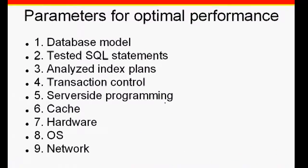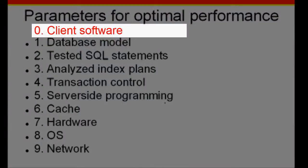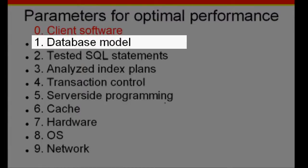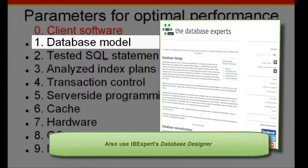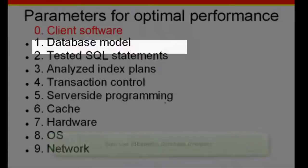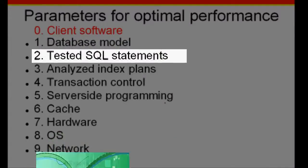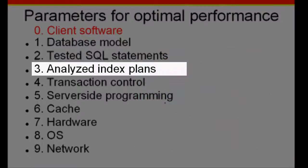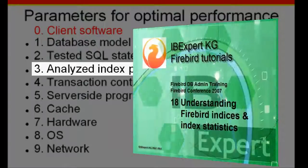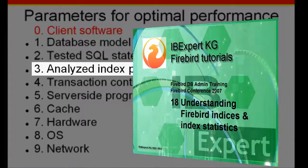Parameters for optimal performance — we've added an extra point here. Client software: how well the application is written trumps everything. Database model: if your database model is weak, no amount of tweaking other parameters will make any significant difference. Read the IB Expert Online Documentation article, Database Design and Database Normalization, and use IB Expert's Database Designer to optimize your database model. Test your SQL statements — refer to tutorial 19, Optimizing SQL Statements, for further information. Analyze index plans, as explained in tutorial 18, Understanding Firebird Indices and Index Statistics.